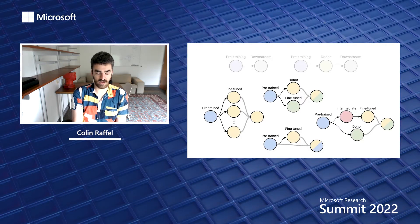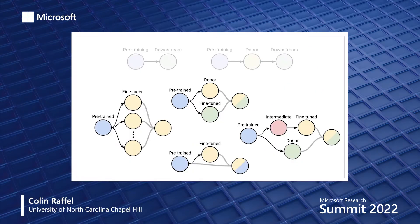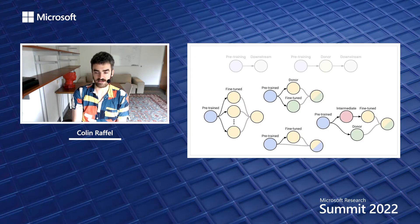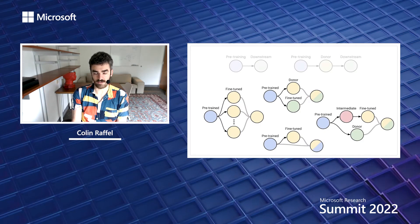For example, we could take a pre-trained model, fine-tune it on many different downstream tasks, and merge each of the fine-tuned models to get an ensemble model that hopefully works better. Or we could emulate intermediate task training by taking a pre-trained model, separately training it on a donor task and a downstream task, and then merging the updates to get a model that works about as well as standard intermediate task training.